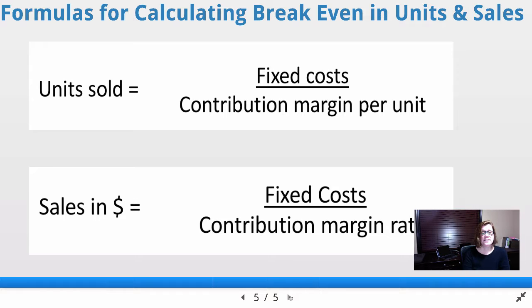Your sales in dollars is going to be the same numerator, fixed costs, but your denominator now is going to be contribution margin ratio.